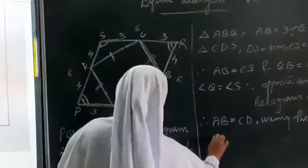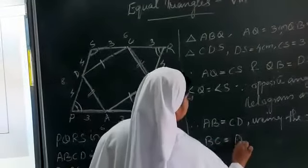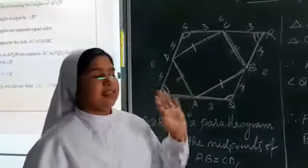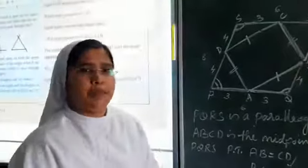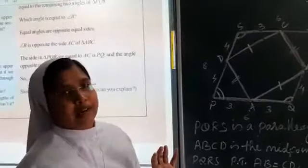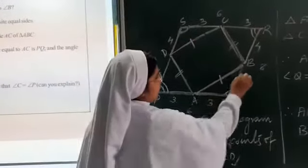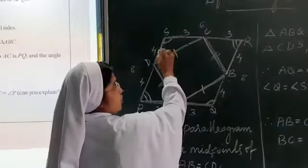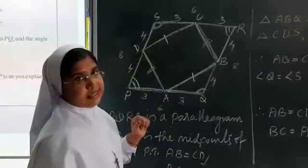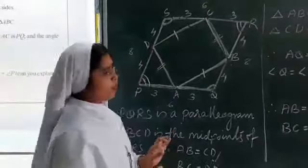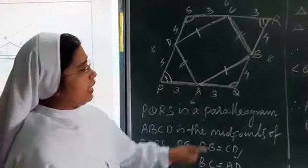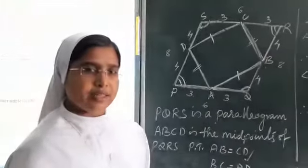Therefore, using the third principle, we can say that BC is equal to AD. The important things we used are: in a parallelogram, opposite angles are equal; and by the third principle, if two sides and the angle made by them are equal in two triangles, then the third side and the remaining angles are also equal. So we have proved that AB is equal to CD and BC is equal to AD. Thank you.